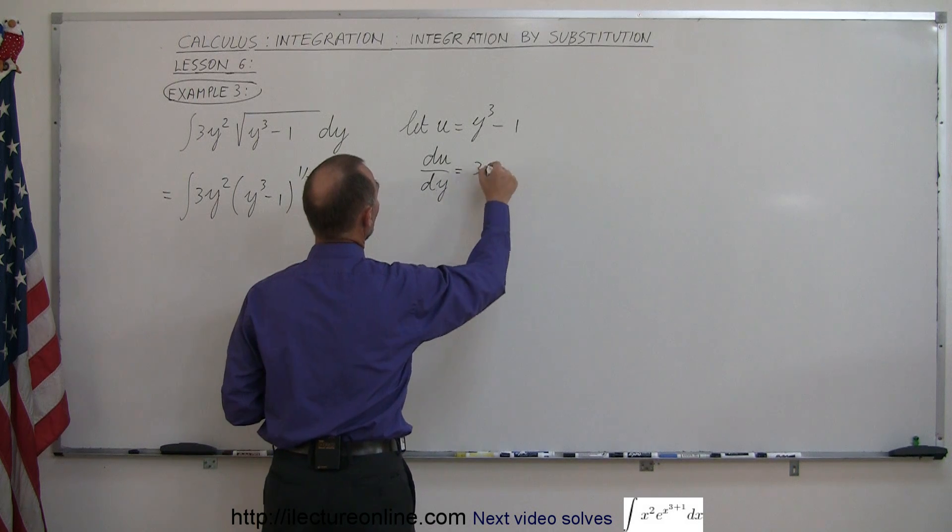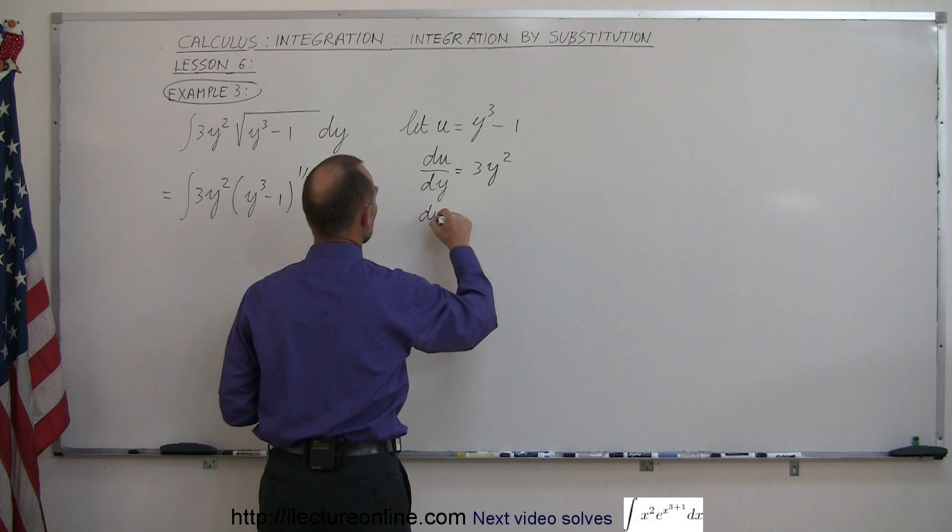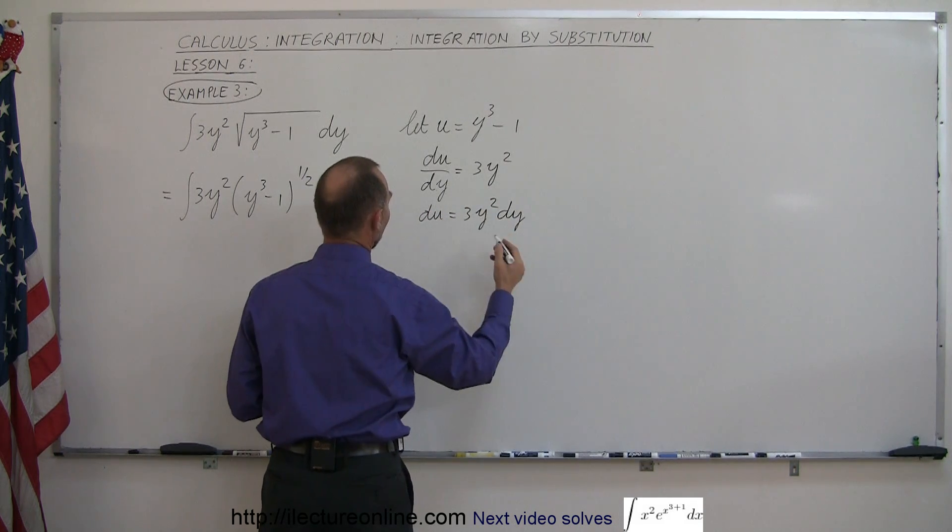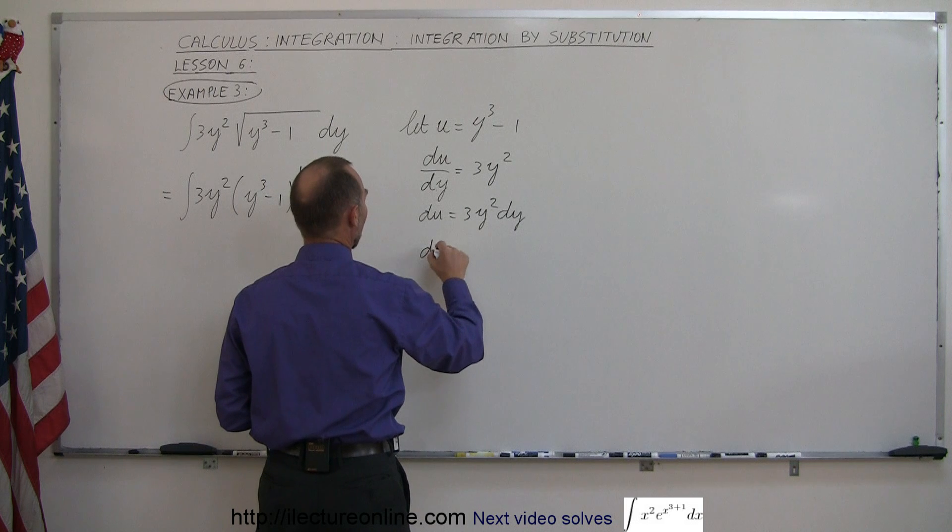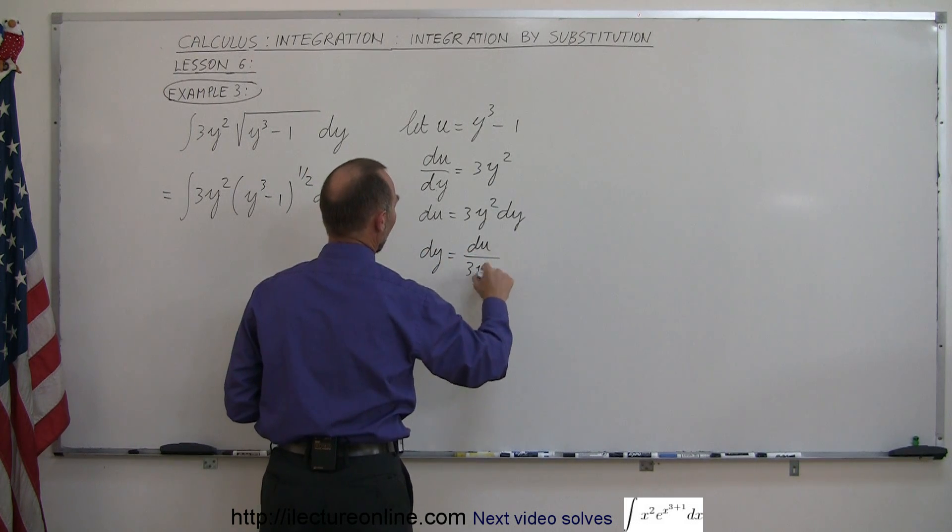So this is equal to 3y squared. Multiplying the dy over here we get du is equal to 3y squared dy and finally we can say that dy is equal to du divided by 3y squared.